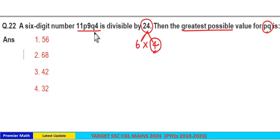When a number is divisible by 4, its last two digits should be divisible by 4. Here Q4 should be divisible by 4.